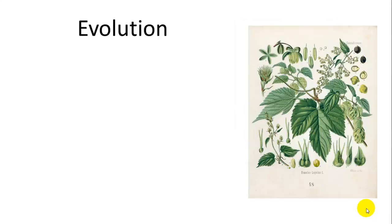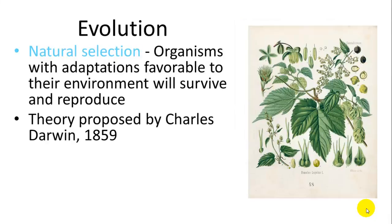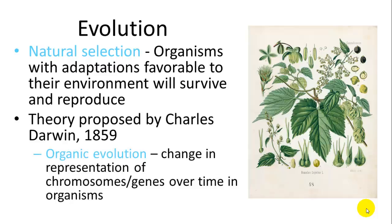Evolution history really starts with the theory of natural selection, proposed by Charles Darwin and Alfred Wallace in 1859: organisms with adaptations favorable to their environment will survive and reproduce more so than less-favorable organisms. This is organic evolution — a change in genetic structure or representation of genes over time in populations. Individuals don't evolve; evolution happens over generations.